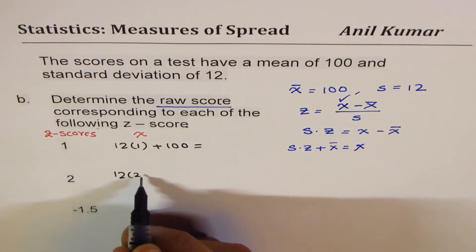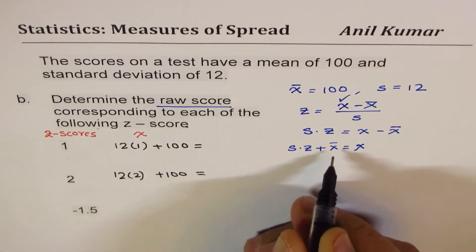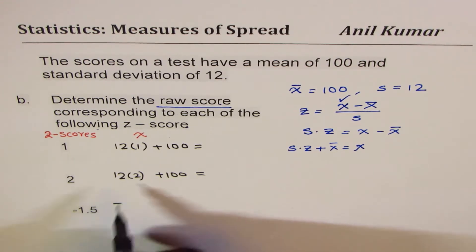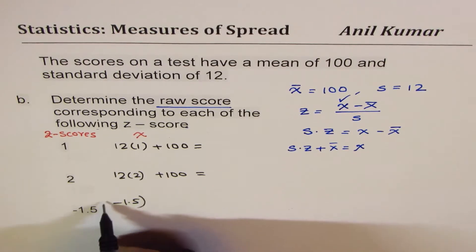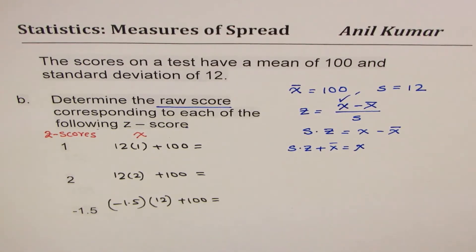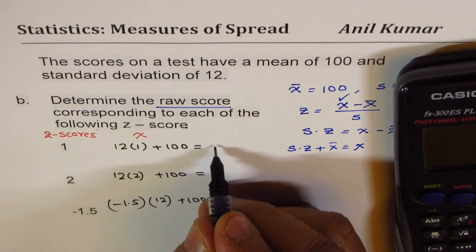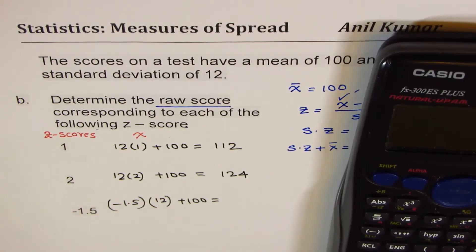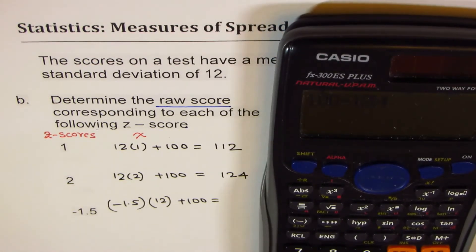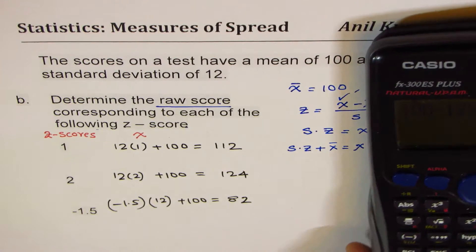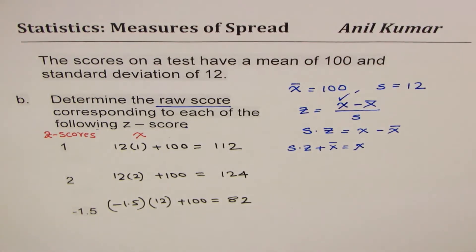In this case it would be 12 times 2 plus 100. And here it would be minus, since this is minus 1.5 — 12 times negative 1.5 plus the mean. So the first answer is 112, this is 124, and for the last one: 100 minus 12 times 1.5, which is 82. So that is what we get as our answers.